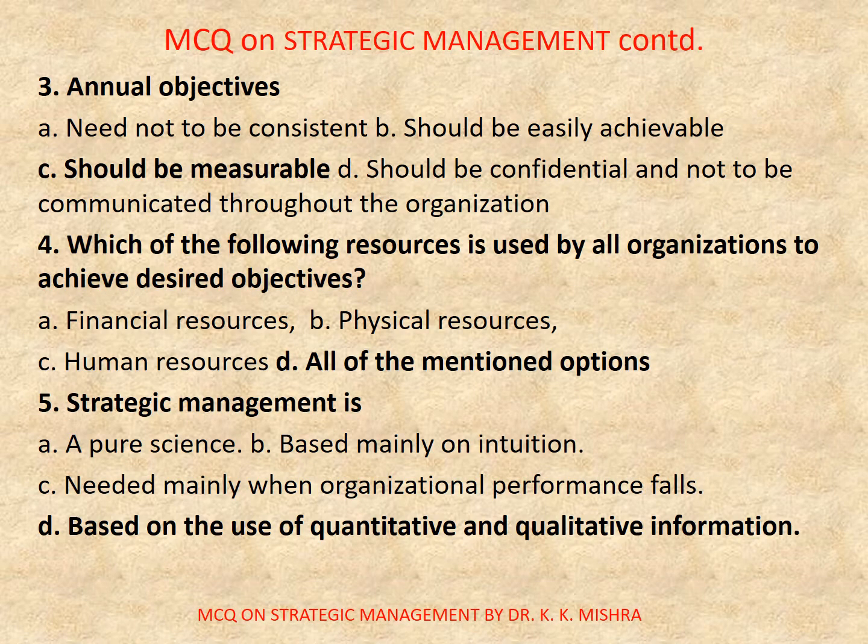Question 3: Annual objectives — A, need not to be consistent; B, should be easily achievable; C, should be measurable; D, should be confidential and not to be communicated throughout the organization. Correct option is C: should be measurable.